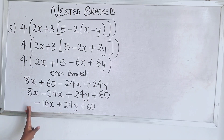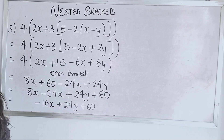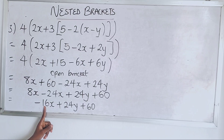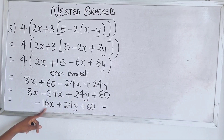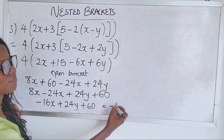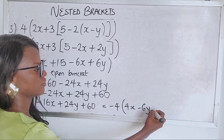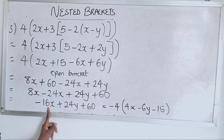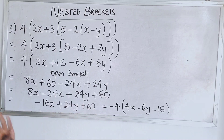So we have plus 24y. You can arrange however you want — putting letters first: minus 16x plus 24y plus 60. Some people can leave their answer like this, and that's fine. But for those who already know factors, you can see that four is common throughout. So factoring out minus four gives: minus four times (4x minus 6y minus 15). Either form is correct — do not panic, do not stress.